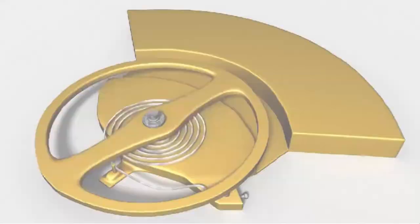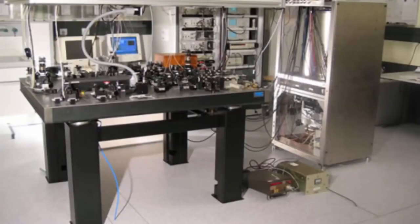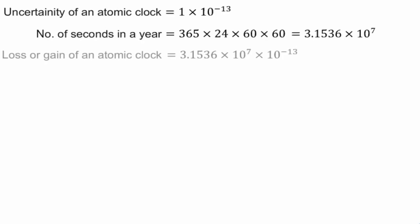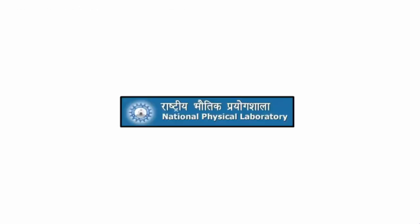The caesium atomic clock has an accuracy of 1 second in 1 million years, or an uncertainty of ±1 × 10^-13. The number of seconds in a year is 3.1536 × 10^7. Hence, the atomic clocks lose or gain no more than 3 microseconds in one year. That is why a caesium atomic clock is used at the National Physical Laboratory, NPL, New Delhi, to maintain the Indian standard of time.